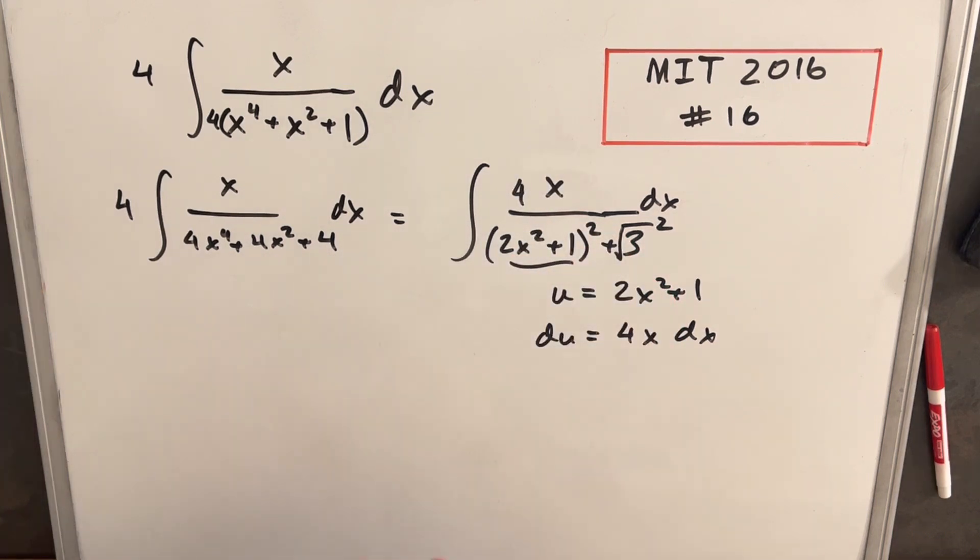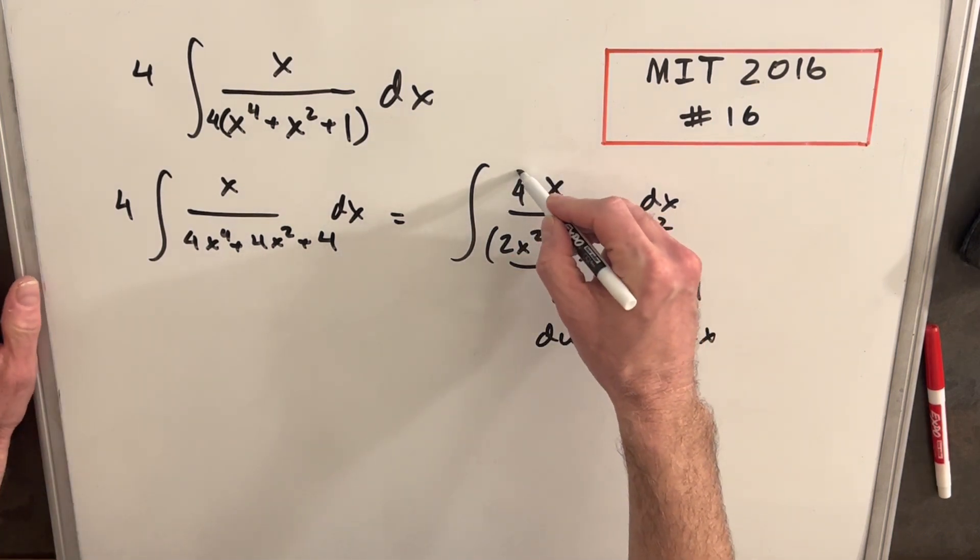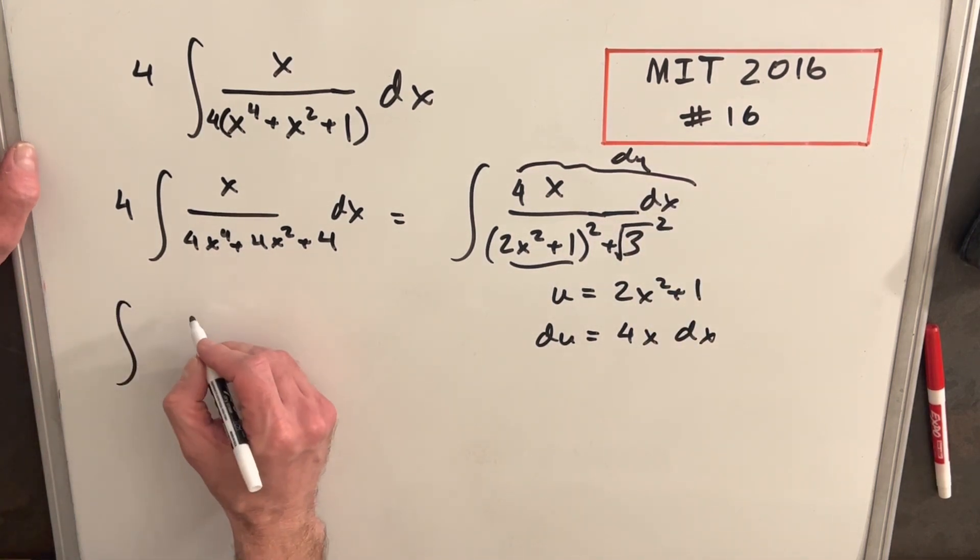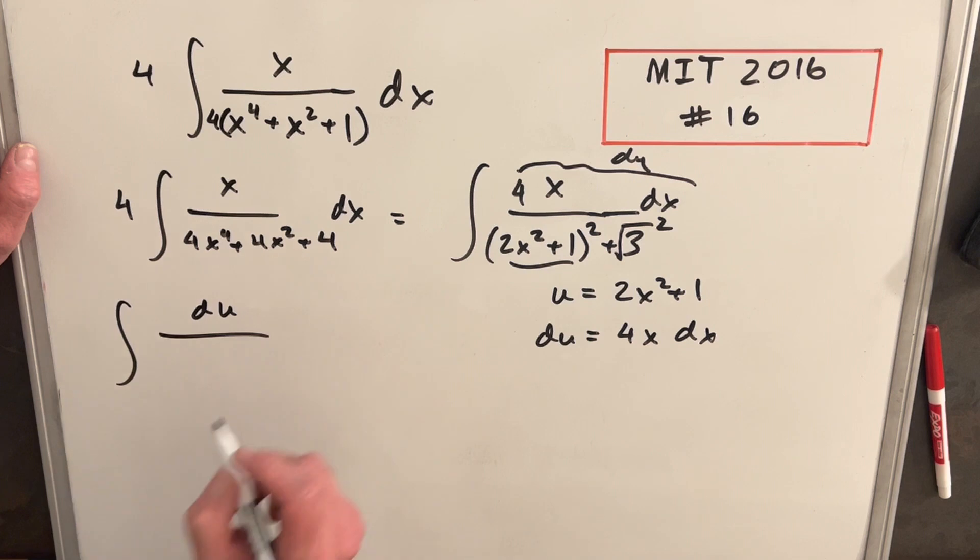And we have our 4 right here. We'll just bring this inside the integral. So then with the 4 there, this whole numerator is our du. So then we can rewrite this and make our substitution. So we're going to have just du over u squared plus square root of 3, all squared.